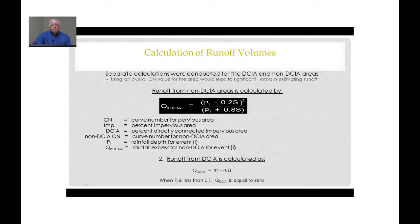In the BMP Trains model, the calculations have been modified slightly. Two different runoff values are calculated: runoff from the non-DCIA areas is calculated using the relationship just described, and runoff is also calculated separately from the DCIA areas — essentially impervious areas — by taking the rainfall and subtracting a tenth of an inch for abstraction. These two are calculated separately because you can get substantial errors in estimating runoff when you lump the DCIA and non-DCIA areas into a single curve number.